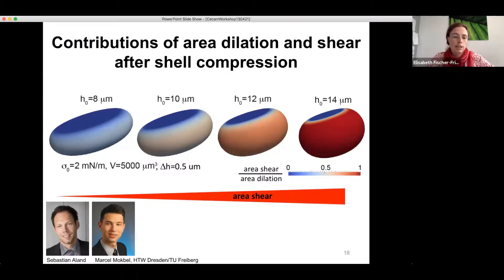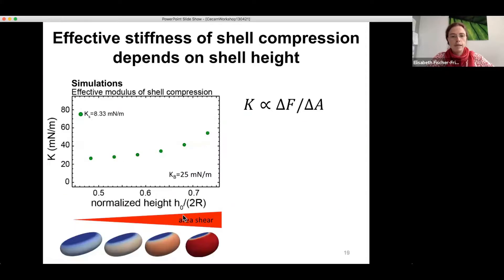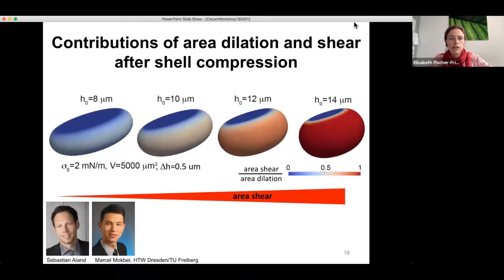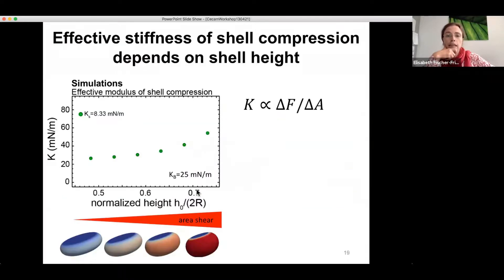Okay. And we teamed up with collaborators from the group of Professor Sebastian Alland and his student Marcel Mokbel actually performed simulations of this compression, uni-axial compression of a shell that we apply to our cells. What they found is that if we start from a relatively high reference height, then the contribution of area shear through the deformation is relatively large. It's shown here by the red color in the shell. But if we go to more and more confined cell shapes as here, then the contribution of area shear goes down and we almost have only area dilation left.